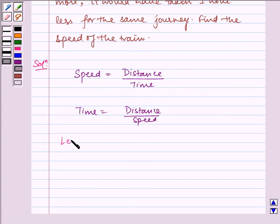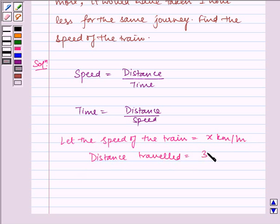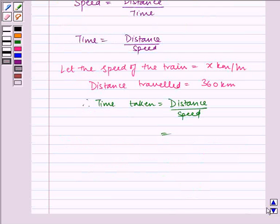Let the speed of the train be x km per hour. The distance traveled is given as 360 km. Therefore, time taken equals distance upon speed, which is 360 by x hours.